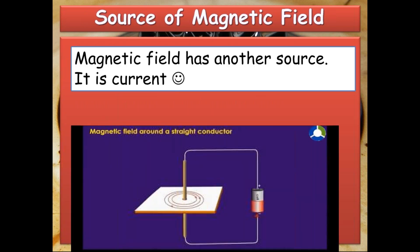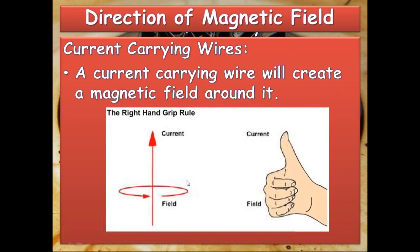As you can see in this picture, the current is moving in the downward direction. So if you point your right-hand thumb in the direction of the current, which is pointing downwards, your curled fingers will move in this direction, showing the direction of the magnetic field. This is called the right-hand grip rule.